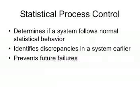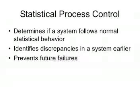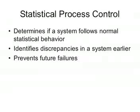This means that 99.997% of your product will fall inside the product tolerance. Statistical process control, or SPC, is used to determine if a system has deviated from its normal statistical behavior. Through the use of SPC, discrepancies of a system can be identified earlier and prevent future failures. Six Sigma programs often depend on statistical process controls to provide their data and supportive information.